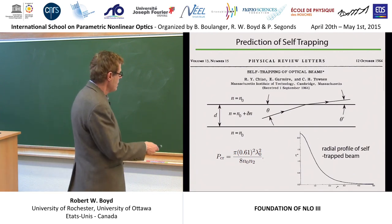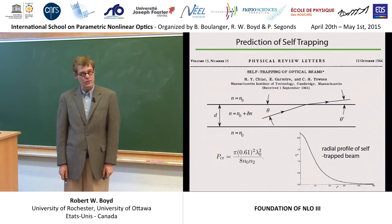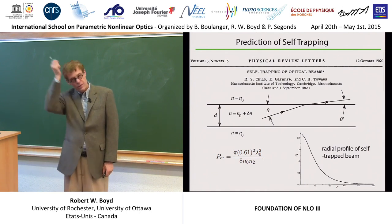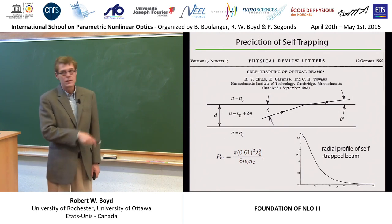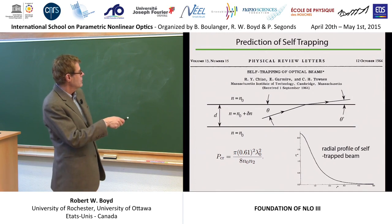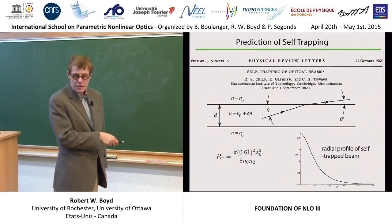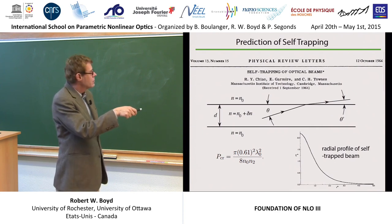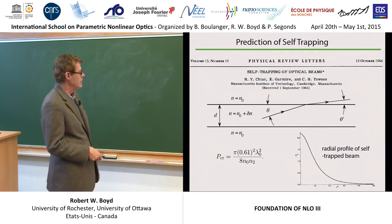Look at this result — there are some interesting features. First of all, it's a critical power, not a critical intensity. You say to yourself, but I thought that nonlinear optical effects depend on the intensity. Why does this depend on a critical power? The answer is that if the diameter gets bigger, the intensity gets lower, but the beam wasn't trying so hard to diffract. So the balance between self-focusing and diffraction depends only on the total power of the beam and not on the intensity.